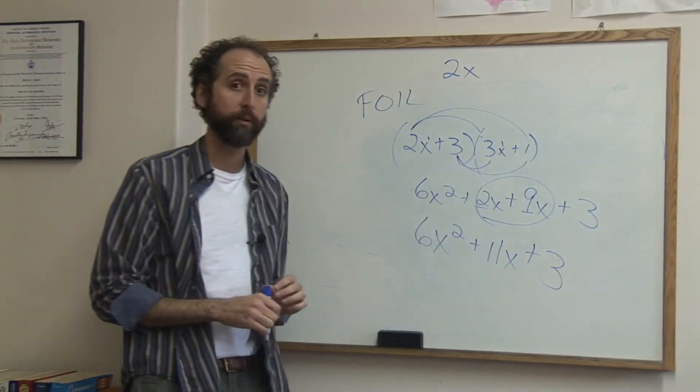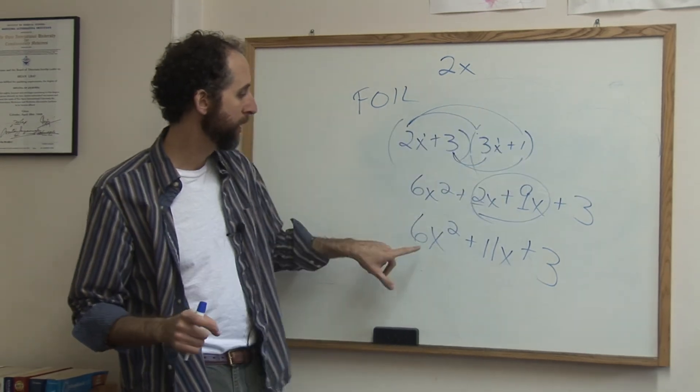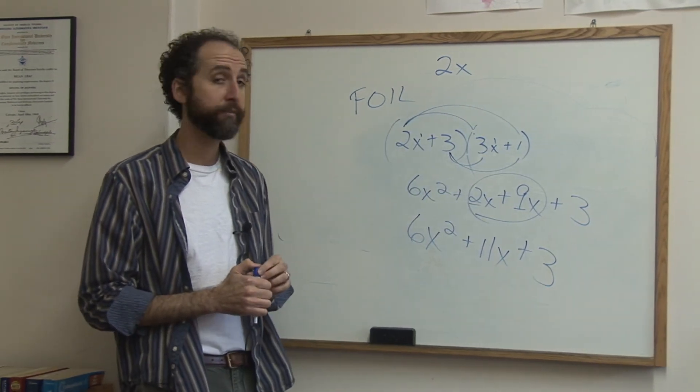This part gets combined to become 11x. So the product, the multiplication of these two binomials, 6x squared plus 11x plus 3.